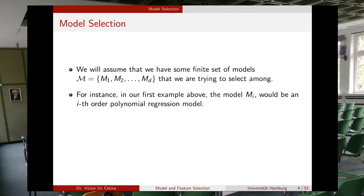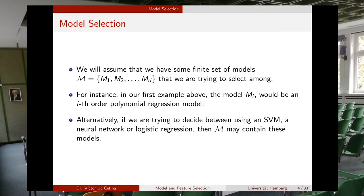In this example, some model M_i may be making reference to a polynomial of degree i. Alternatively, if we are trying to decide between using a support vector machine, a neural network, or a logistic regression, then this set M of models will contain all the possible models that we are considering.